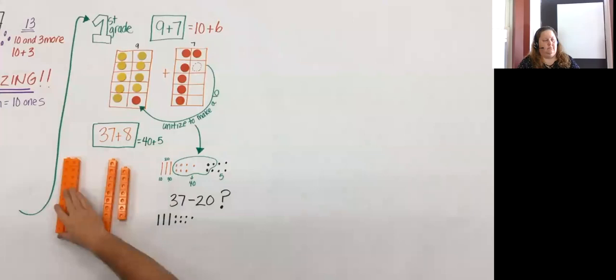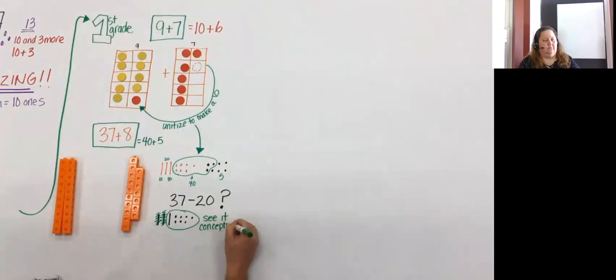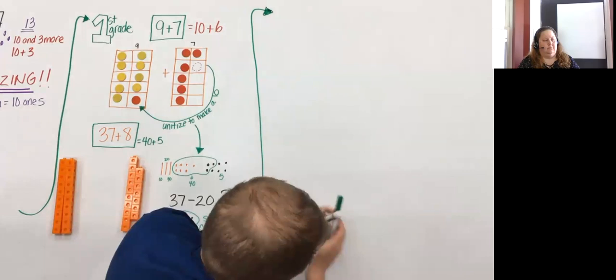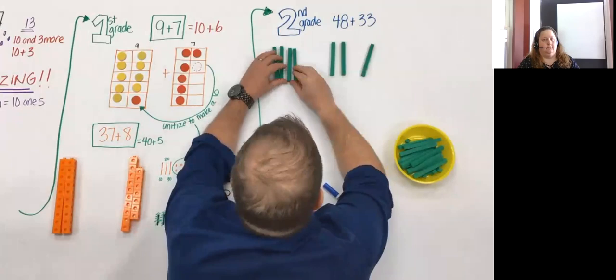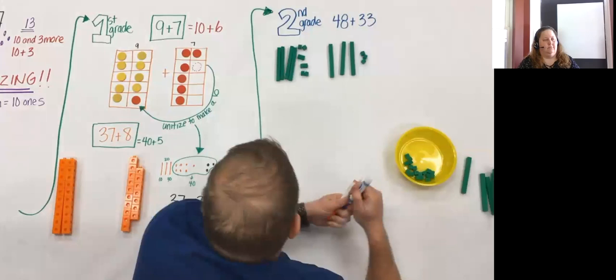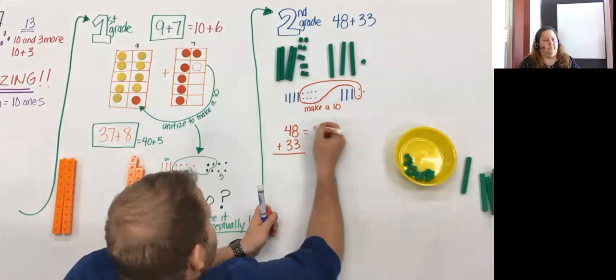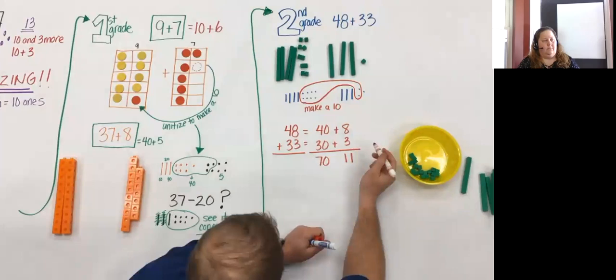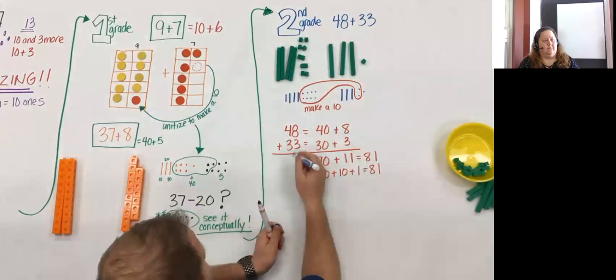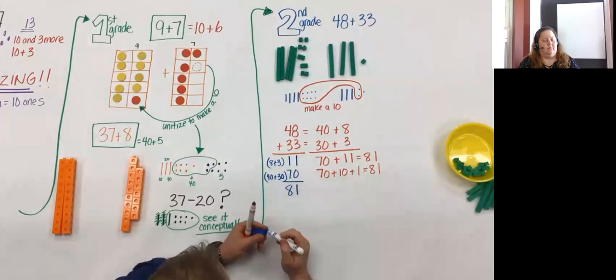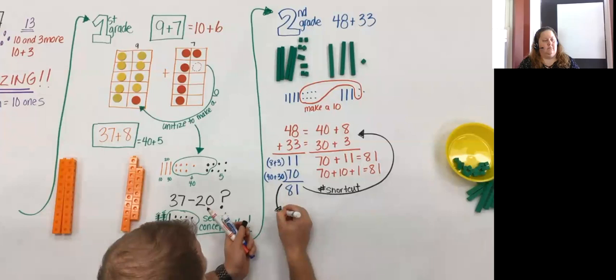In second grade students use two two-digit numbers and this is where we begin to introduce base ten blocks because of unitizing that students are still developing. Just like before, we draw a representation, create another bundle of ten. Students can move from the concrete to the representation to the abstract. To become more efficient they can begin to use partial sums as a shortcut: eight plus three is eleven, forty plus thirty is seventy. This understanding of partial sums leads brilliantly into partial products in fourth grade.